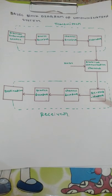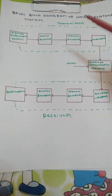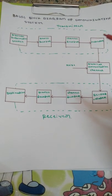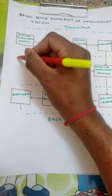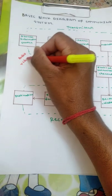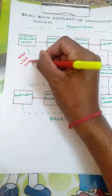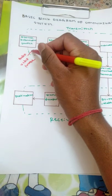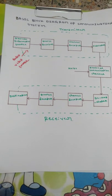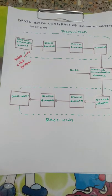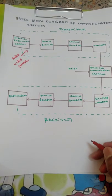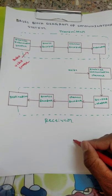The first block is the discrete information source, which is nothing but the module that produces the data signal. The data may be anything — audio, video, or image. The data is produced by the discrete information source at the first block. Then comes the source encoder.